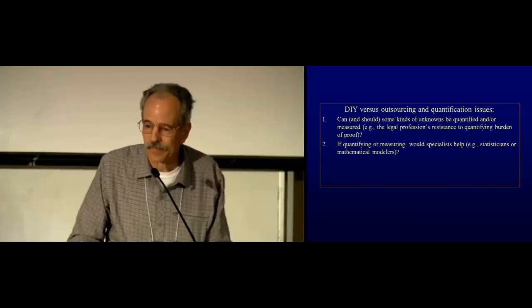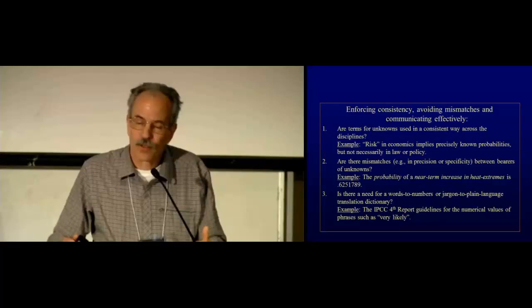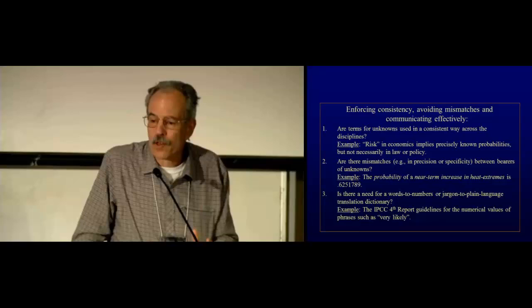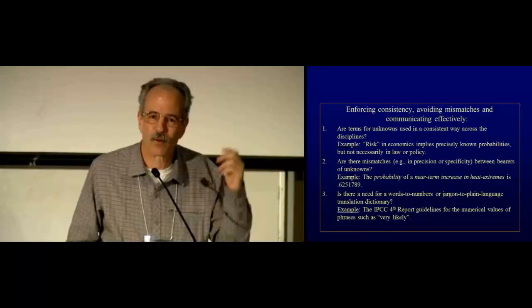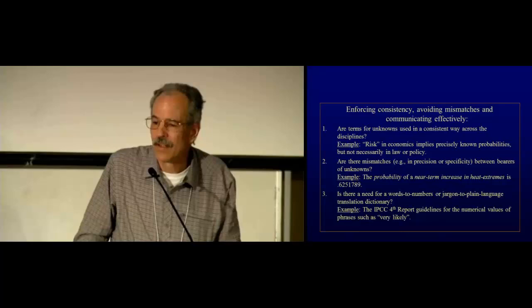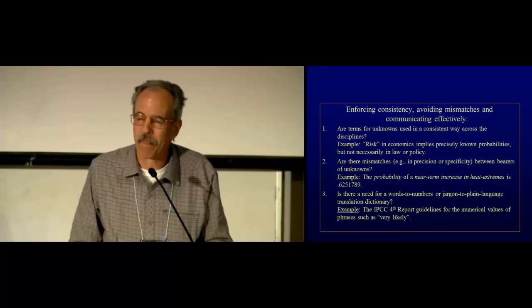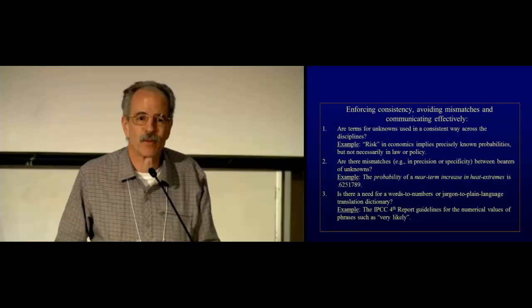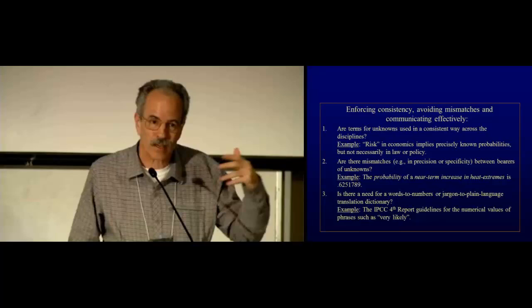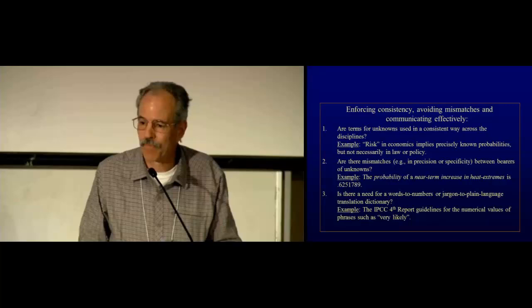What about consistency in avoiding mismatches? Are terms for unknowns that are shared across disciplines used in the same way? I mentioned risk. Risk is very different depending upon whether you're an economist, a political scientist, or a policymaker. Are there mismatches? And the example I've got here is a very vague event. What is near term? How big an increase you're talking about? And what on earth is a heat extreme? And then I've pinned this very precise probability to it. That should strike you as just nonsense. How can I put a precise probability on an event that's so vaguely defined as this? Is there a need for a word to numbers or back and forth translation dictionary of some kind? And if so, can people agree on that? I've participated in a 25-nation study of laypeople's interpretations of the IPCC framework and guidelines for the uncertainty terms that they used in their fourth report. And we find systematic deviations, understandably, in laypeople in their understandings of what those terms mean from what the scientists said they should mean.